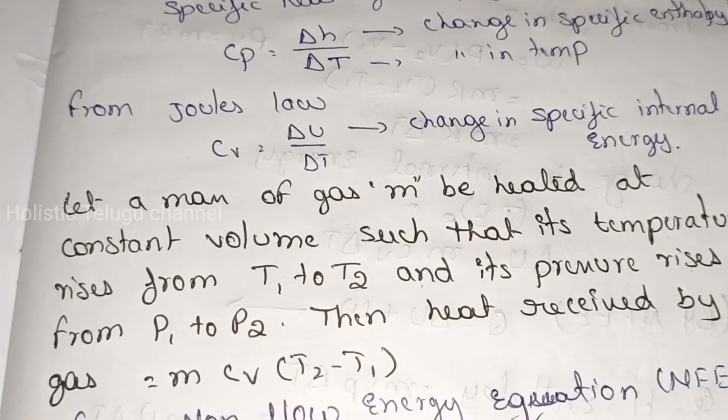Let a mass of gas m be heated at constant volume such that its temperature rises, so at constant volume m is the mass of gas and the temperature rises.